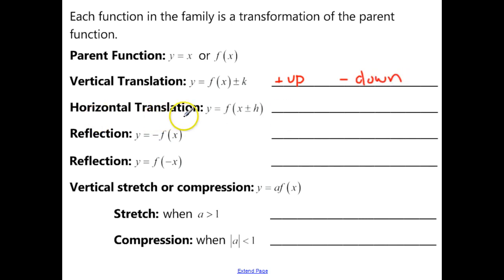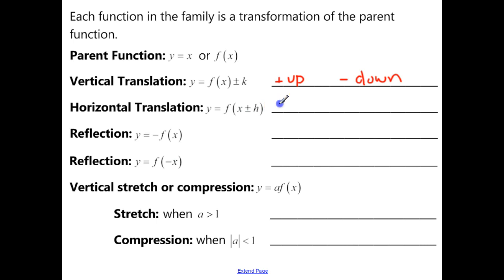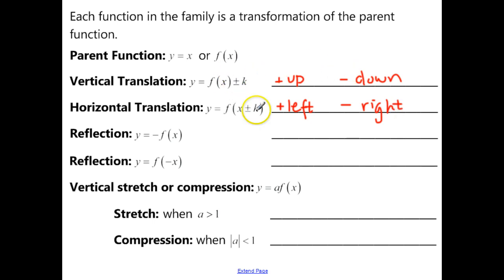Horizontal translations — left and right — you're going to see inside of the function. You'll see a plus or minus some number inside that function, and just like when we did absolute values, the one inside is actually going to be the opposite of what it seems. When you see a plus you're actually going to move it to the left, and if you see a minus sign you're going to move it to the right. So remember: outside is the same as what it looks like, inside is opposite of what it looks like.